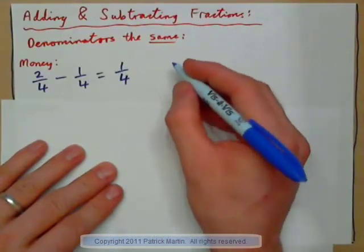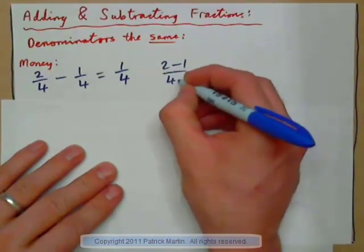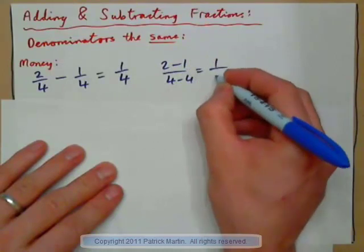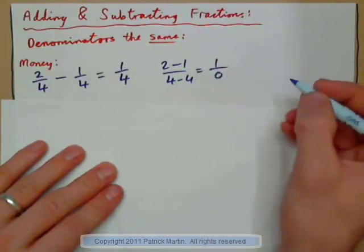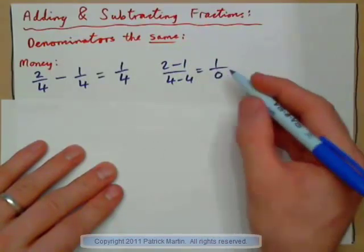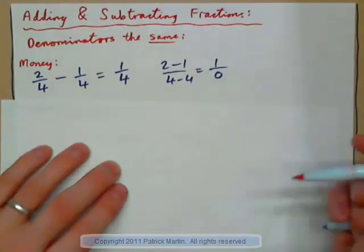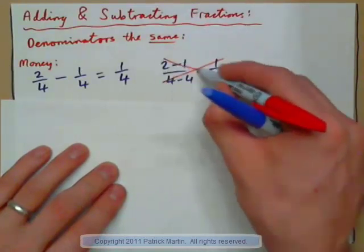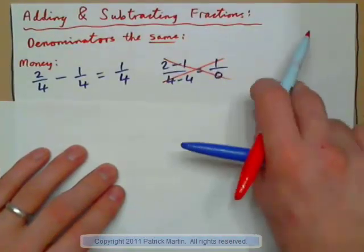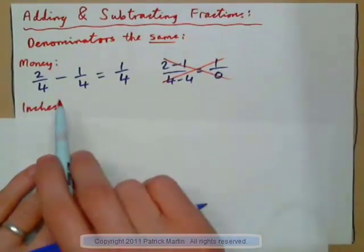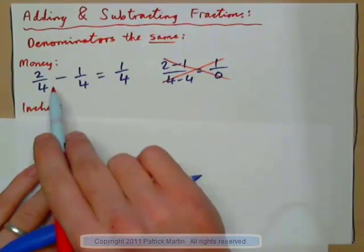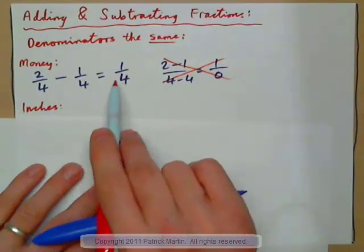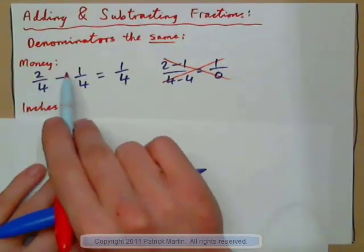So, why didn't we do 2 minus 1 over 4 minus 4 to get 1 over 0? That's nonsense, isn't it? The strange thing about fractions is that when the bottoms are the same, we just leave them alone and we combine the tops.